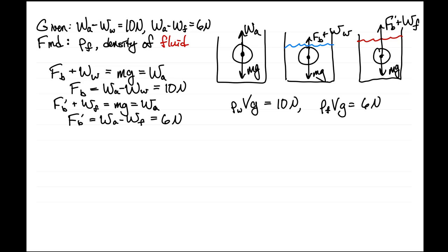So we get that the density of water divided by the density of the fluid equals 10 newtons over 6 newtons, which equals 5/3. That tells us the density of the other fluid is 3/5 the density of water, which is roughly 600 kilograms per cubic meter.